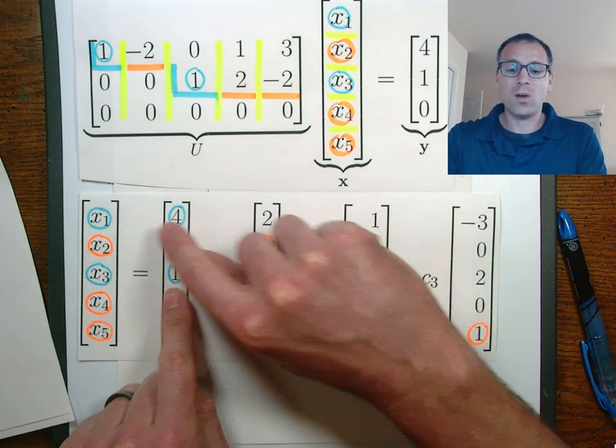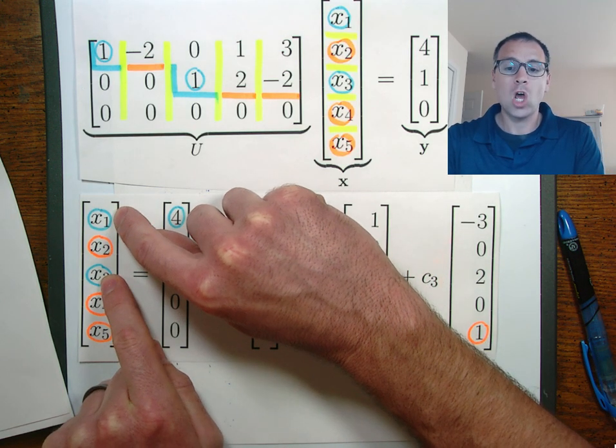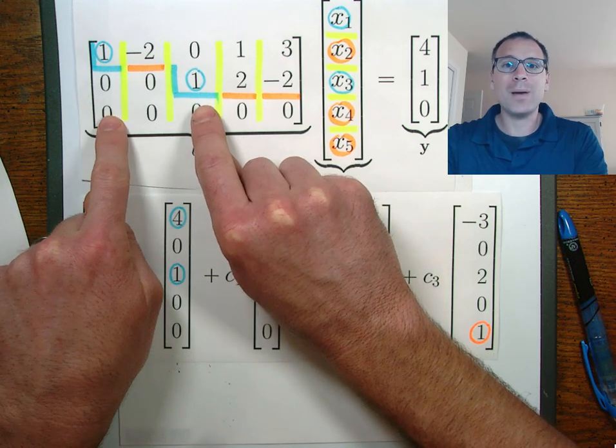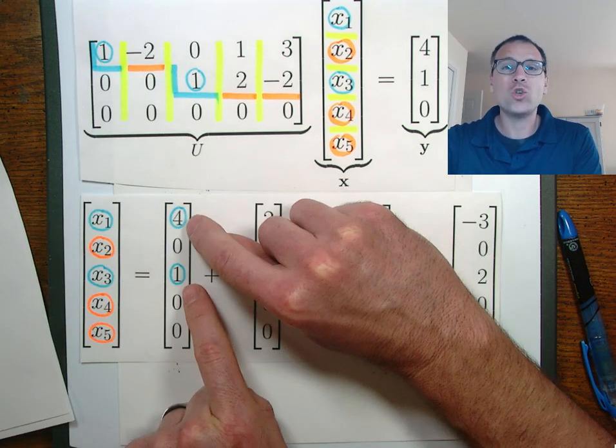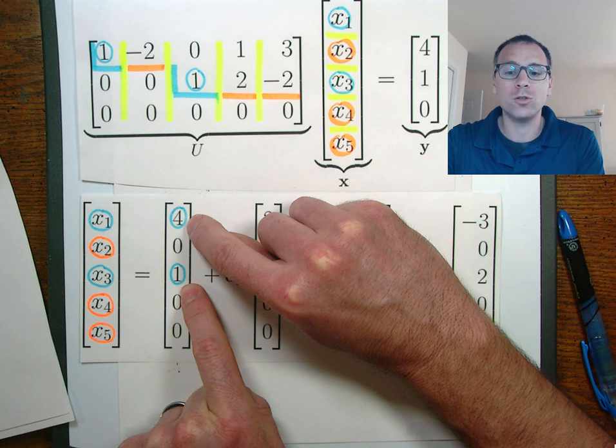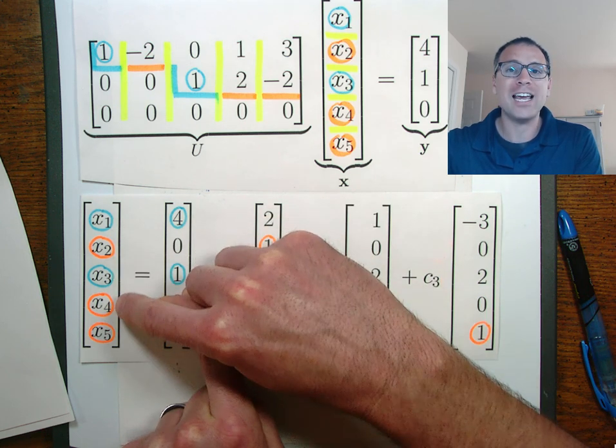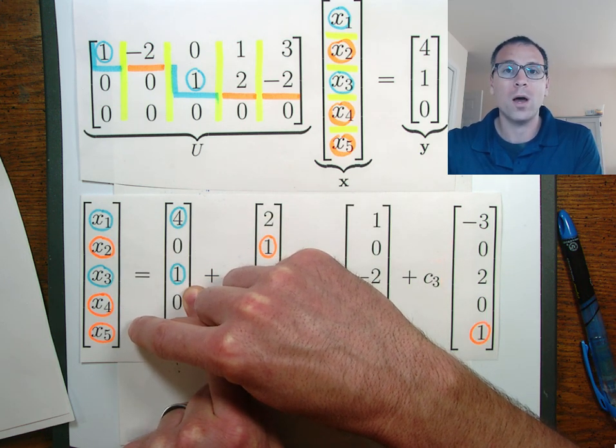This immediately gives rise to the observation that when we have our pivot variables, those linearly independent columns give rise to a unique particular solution, assuming that we do not take the other non-pivot variables into consideration.